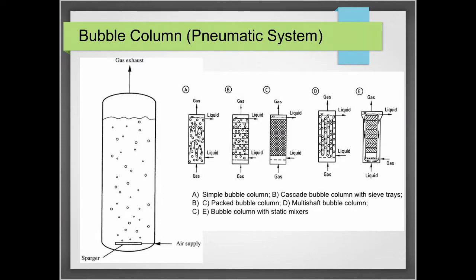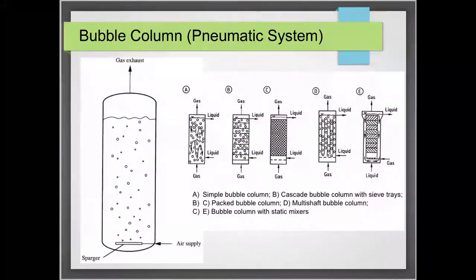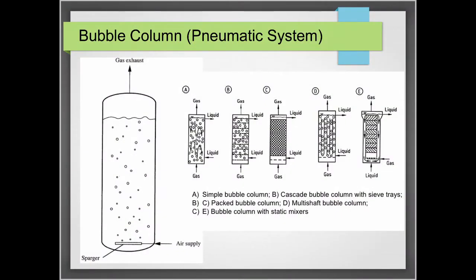Another pneumatic system is the bubble column — a simple tank with an air supply at the bottom. Unlike airlift reactors, bubble columns have no draft tubes to facilitate fluid movement. The simple bubble column has the least efficient mixing of all configurations. Variants include cascade bubble columns with sieve trays, packed bed bubble columns, and multi-shaft bubble columns with static mixers.